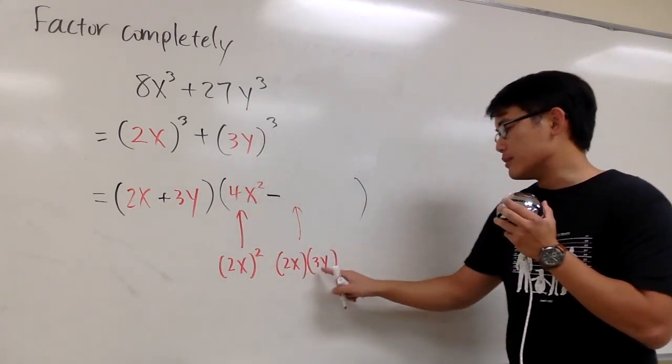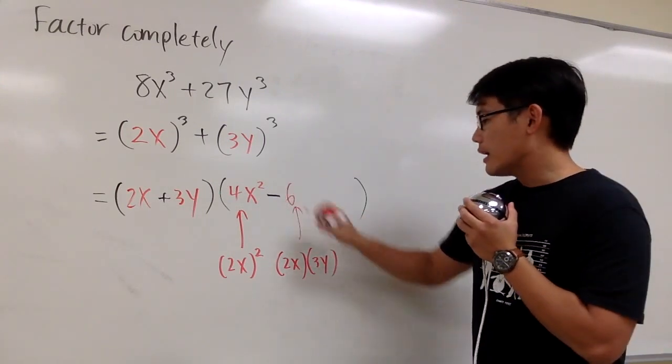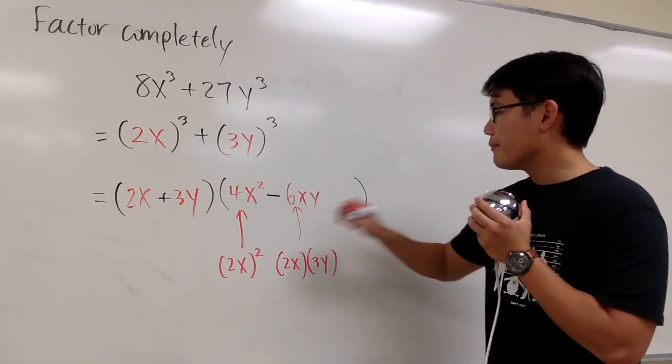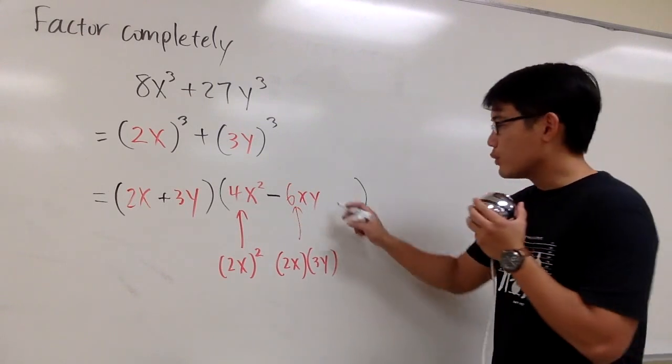As we can see, 2 times 3 is 6, and x times y is just xy. And then for the last part, we have plus.